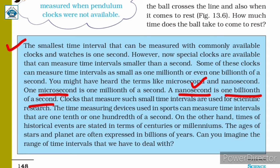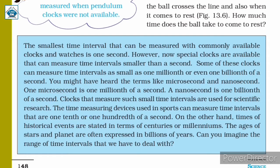These precise clocks are also used in sports. Time measuring devices used in sports can measure intervals as small as 1 tenth or even 1 hundredth of a second. Historical events are stated in terms of centuries or millenniums, and the ages of stars and planets are expressed in billions of years. So from 1 nanosecond to billions of years, we can imagine the enormous range of time intervals we deal with.